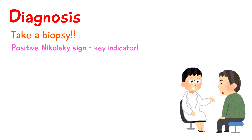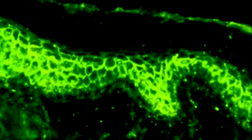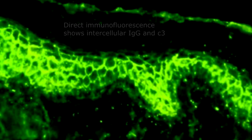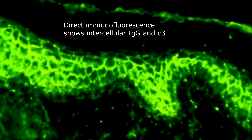A biopsy for direct immunofluorescence of normal skin next to the blister or erosion area will show intracellular IgG and C3. If we use indirect immunofluorescence of the blood, this will show intracellular IgG deposition on stratified squamous epithelium.